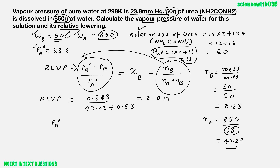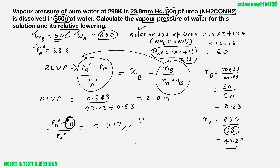So (Pa standard minus Pa) by Pa standard, that is relative lowering of vapour pressure, is equal to 0.017. That is the first answer. Now we have to find vapour pressure of the solution, PA. Substituting: (23.8 minus PA) by 23.8 equals 0.017. Solving, PA is equal to 23.4 mmHg.